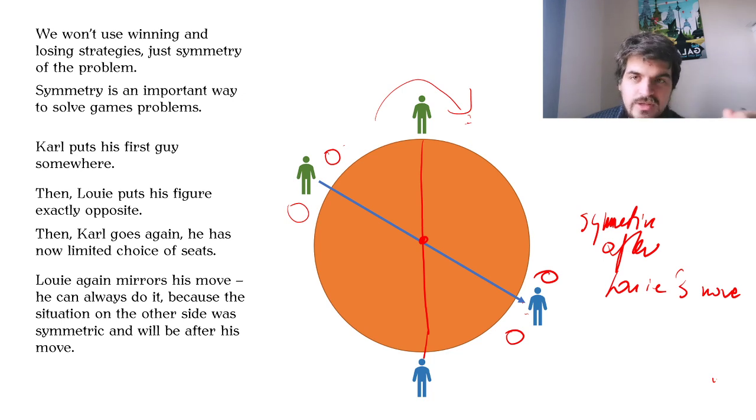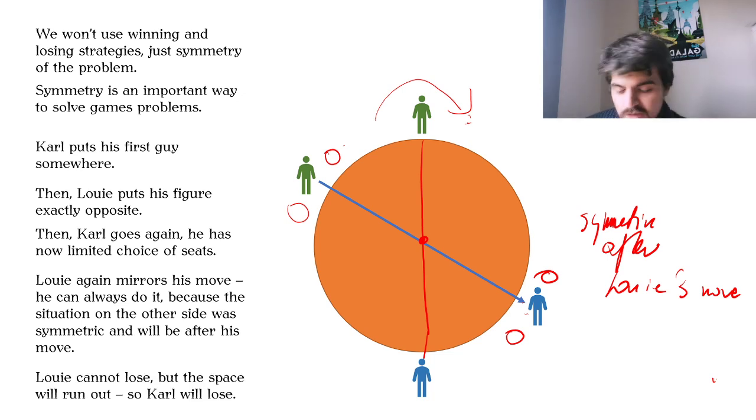Because Louis is always making a symmetric move, he can always do his move. So we know that if Carl's move was possible then there was enough space here. Because the table is symmetric, it's the same situation going on both sides. Then it's always possible for Louis to make his move. So if Carl could make his move then Louis can also make his move. This is really important because that means that Louis cannot lose.